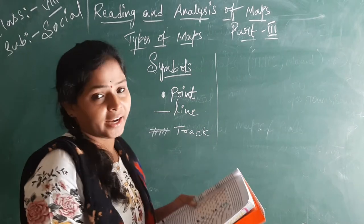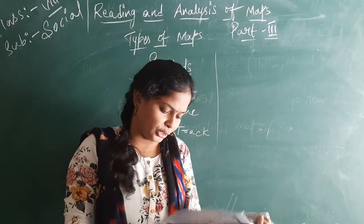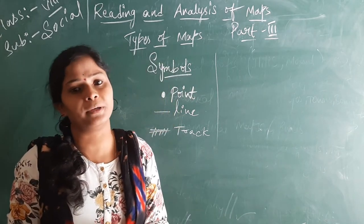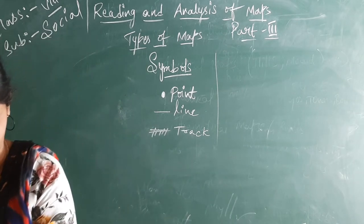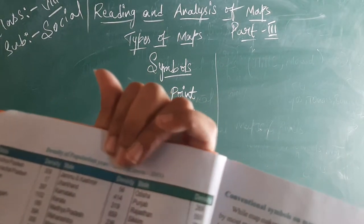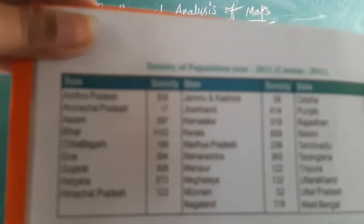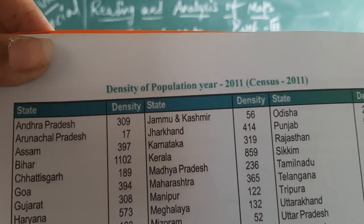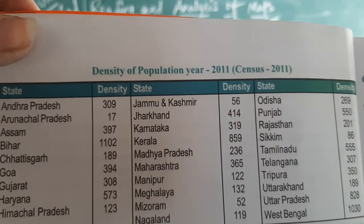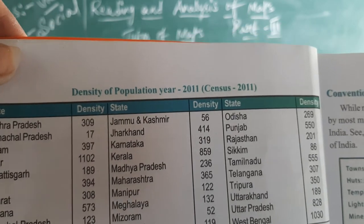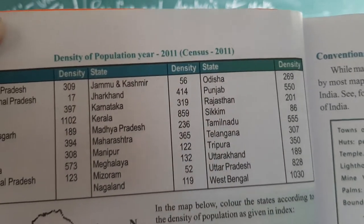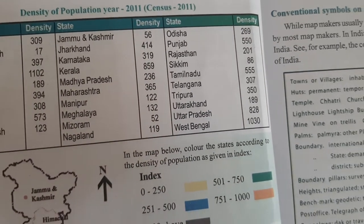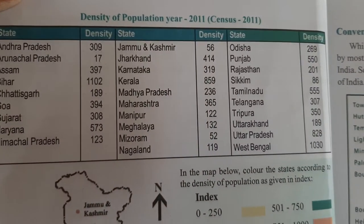Next, color and land cover and land usage in the map. Next, coming to the population density — how the population will be drawn in the map, how it will be calculated. Here you can see India's density of population. Here they gave you the density of the population — that is 2011 census. Here they gave you Andhra Pradesh through all our states. Andhra Pradesh density is 309, Arunachal Pradesh is 17, Assam is 397. Here we can see the highest density is Bihar — 1102 density.